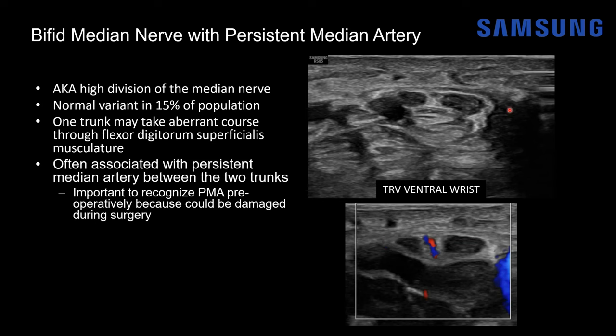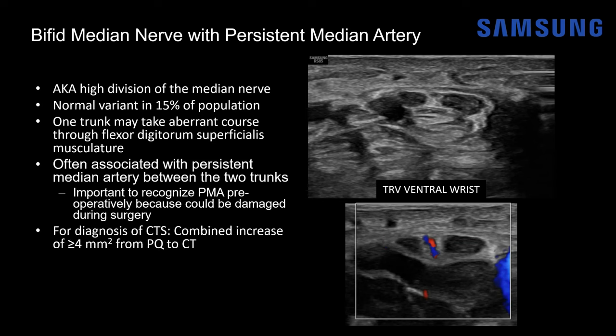Here's the flexor retinaculum — if the patient has carpal tunnel release, you can see how this vessel is just below that retinaculum. A persistent median artery can also occur with a solitary median nerve, in which case it is usually located at the ulnar aspect of the nerve. To diagnose carpal tunnel syndrome in patients with a bifid median nerve, you must measure the diameter of both trunks and combine them, and use a threshold of a 4 mm² increase — rather than 2 mm² — from the pronator quadratus to the carpal tunnel.